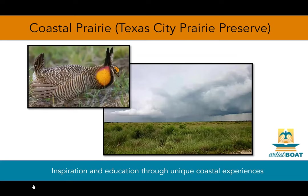Coastal prairies once spanned more than nine million acres from southern Texas up along the Gulf of Mexico and into Louisiana. Today less than one percent remains. This loss of habitat, largely due to development, has devastated many wildlife populations that once thrived in the region. In 1995 the Nature Conservancy established the 2,303-acre Texas City Prairie Preserve in order to restore and revitalize the coastal habitat and preserve the species that depend on it.